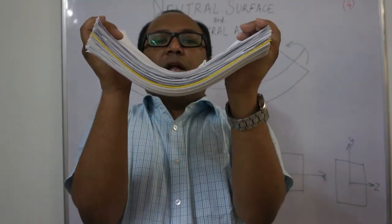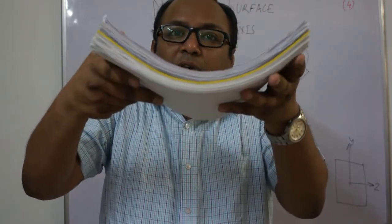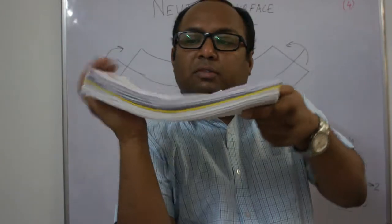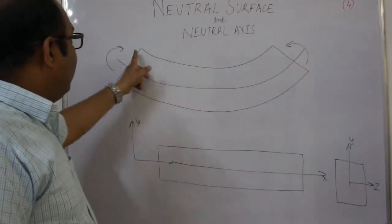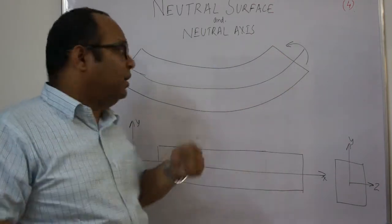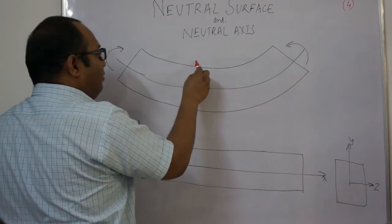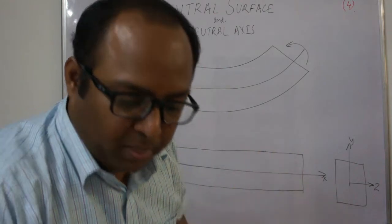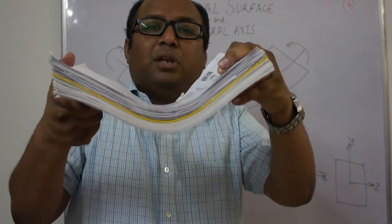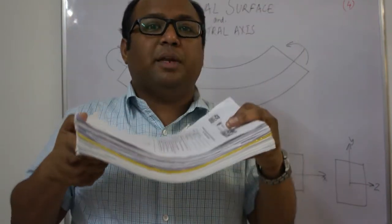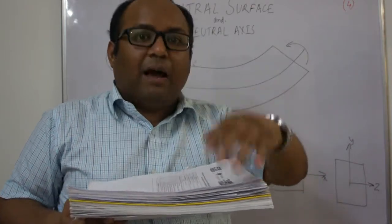When you apply a bending moment, it becomes somewhat like this. You can see that the upper layer — the topmost layer — is in the state of compression, and the bottommost layer is in the state of tension. If I assume that the entire beam is made up of layers, the topmost layer is experiencing maximum compression and the bottommost layer is experiencing maximum tension.